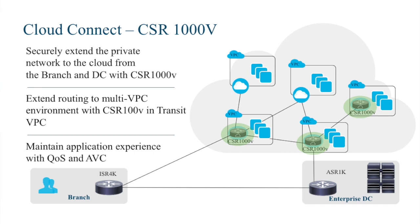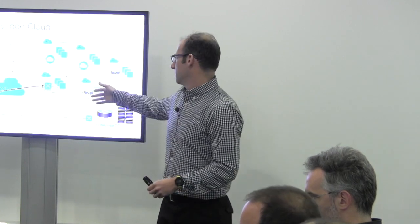The second use case is related to our acquisition of Viptela: SD-WAN extension into the cloud. If I have multiple paths to get to my data center — internet, MPLS, multiple links — why can't I do the same to the cloud? With Viptela vEdge Cloud capabilities, I can launch a vEdge Cloud instance — a virtual version of the vEdge you'd have on-prem — and extend your SD-WAN fabric into the cloud with internet, ExpressRoute, or Direct Connect over private links, with multiple ISPs.